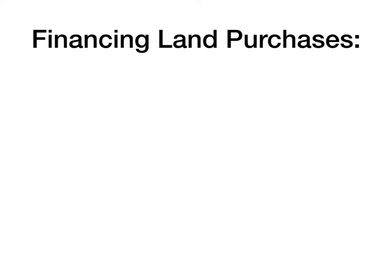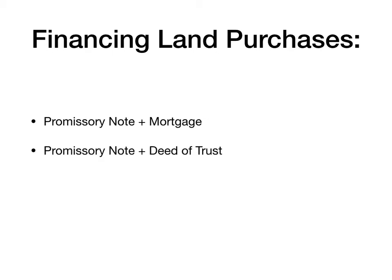When you finance land purchases, you usually have a promissory note and a security instrument. The security instrument can be a mortgage or a deed of trust. States will have adopted one form or the other, so states will either be mortgage states or deed of trust states.